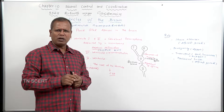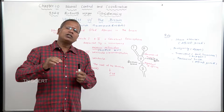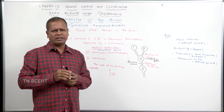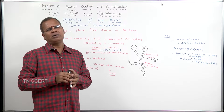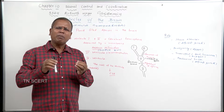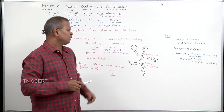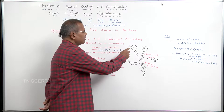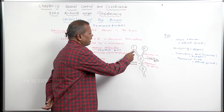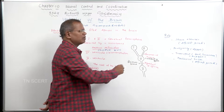Actually, four large ventricles are present in the brain. Lateral ventricles 1 and 2 are present in the cerebral hemisphere.